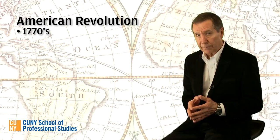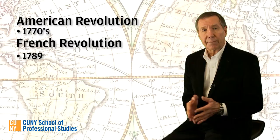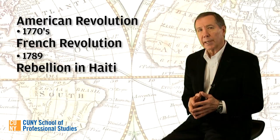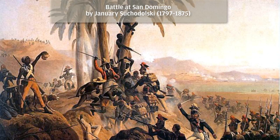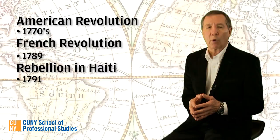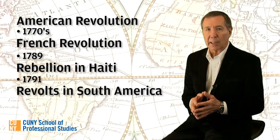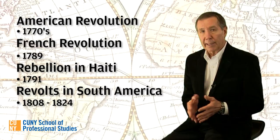We'll begin with the revolution in the English colonies of North America in the 1770s. Then we'll move to the French Revolution in 1789 and consider the effects of both revolutions on Europe in their wake. We'll also study a slave rebellion in the French colony of Haiti in 1791 that led to the establishment of the Republic of Haiti, the first independent black republic in the world. Finally, we'll learn about the political changes that swept through the Spanish colonies in the Americas between 1808 and 1824 that created the modern nations of Latin America.